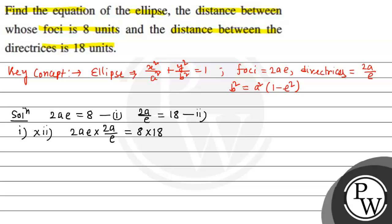2ae and e will eliminate. After calculating a² value, we get a² = (8 × 18)/4. That is, a = 6.